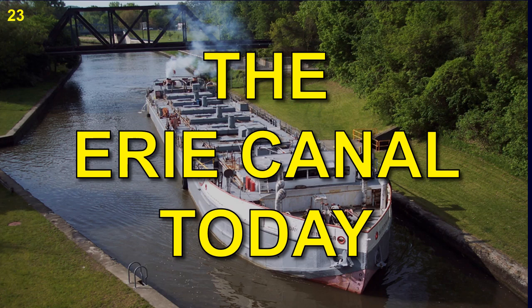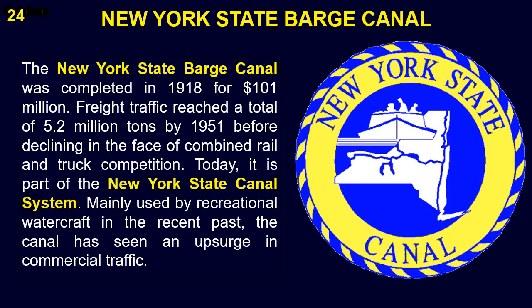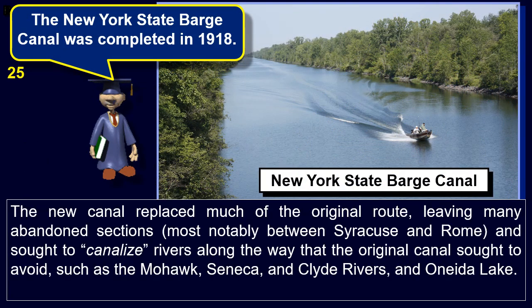The Erie Canal today: The New York State Barge Canal was completed in 1918 for $101 million. Freight traffic reached a total of 5.2 million tons by 1951 before declining in the face of combined rail and truck competition. Today it is part of the New York State Canal system. Mainly used by recreational watercraft in the recent past, the canal has seen an upsurge in commercial traffic. The new canal replaced much of the original route, leaving many abandoned sections, most notably between Syracuse and Rome.